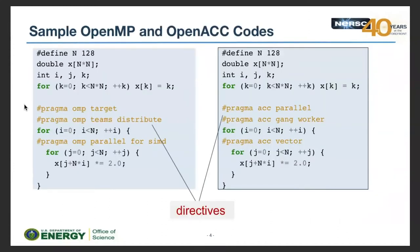Here are sample OpenMP and OpenACC codes. These are directives — about three lines added to the original source code. The compiler may ignore them if it doesn't recognize them or if OpenMP or OpenACC support is not enabled. These are called directives.